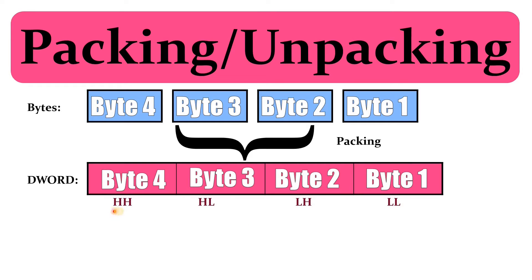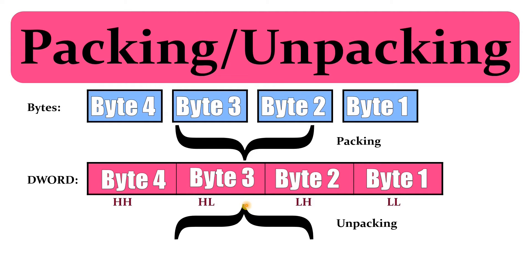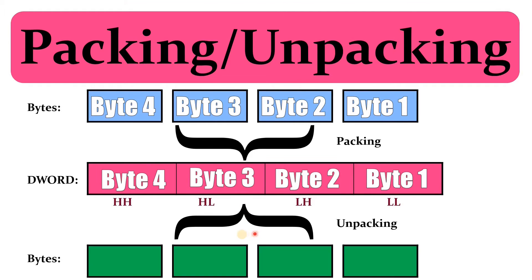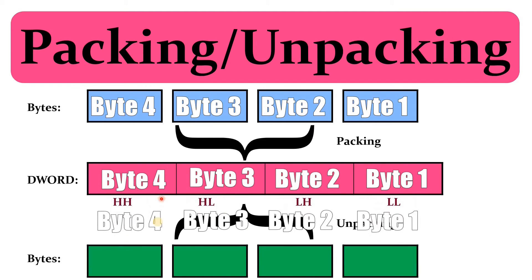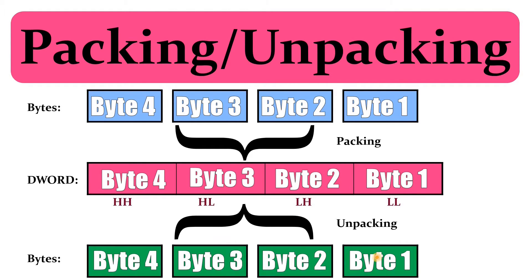Referring to the position of the byte in the double word, we will use HH, HL, LH, and LL. On the other hand, sometimes we have the data in the form of a double word or a word and we want to unpack and retrieve the information from it. In that case we will do unpacking and get four bytes — byte four, byte three, byte two, and byte one. If we pack and then unpack, the information should be the same.